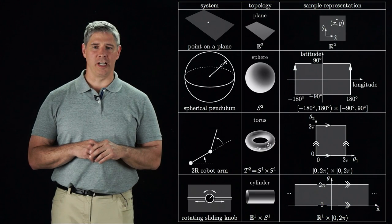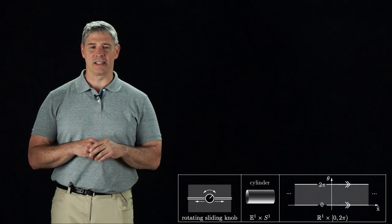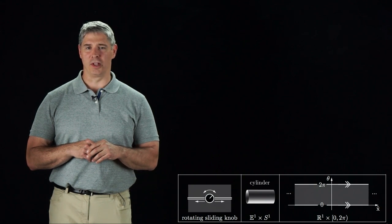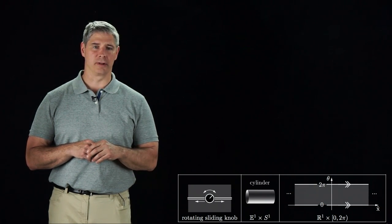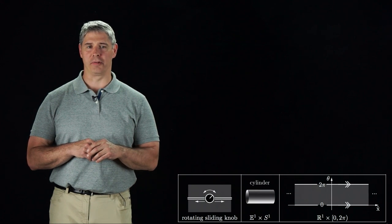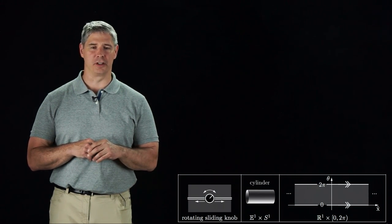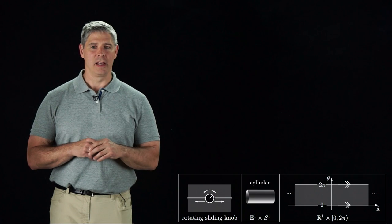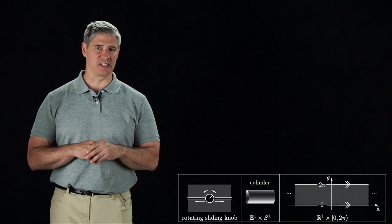Now let's focus on the rotating and sliding knob. Its C-space is a cylinder due to one linear joint and one rotational joint. We can cut this cylinder once to get our coordinate representation, a flat subset of the two-dimensional plane. The angle coordinate is discontinuous at zero and two pi.